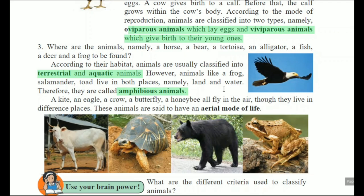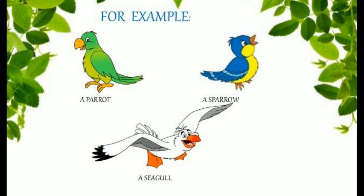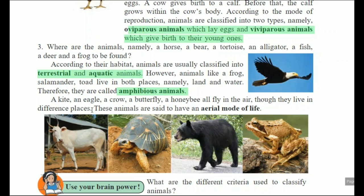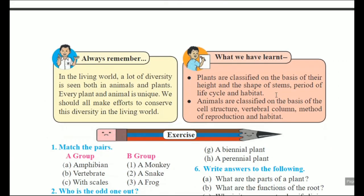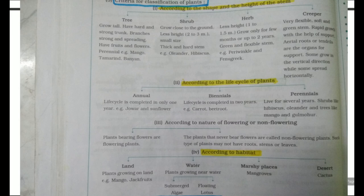The special characteristic of amphibious animals is that they can survive in both water and on land. A kite, an eagle, a crow, a butterfly, a honey bee — all fly in the air though they live in different places. This is called the aerial mode of life.